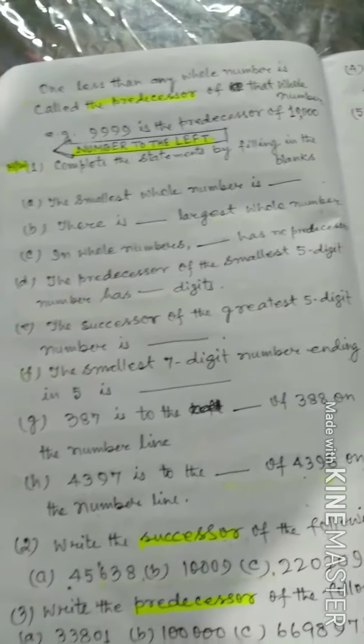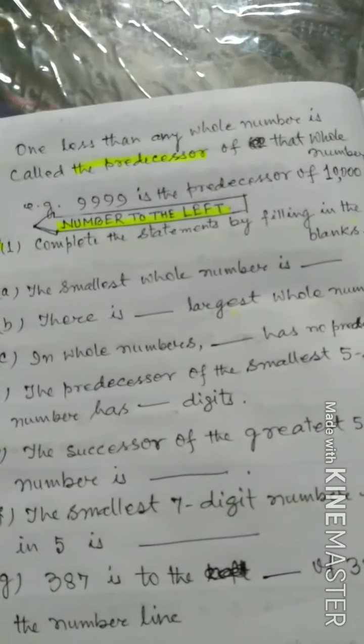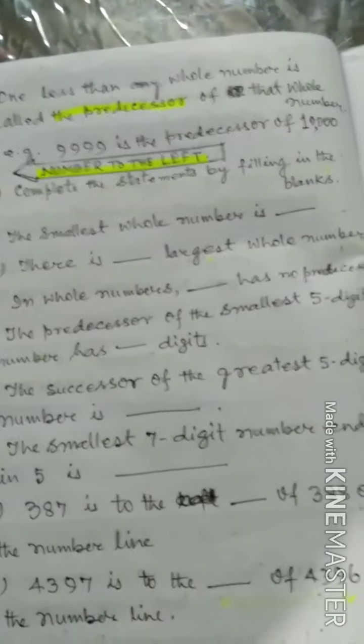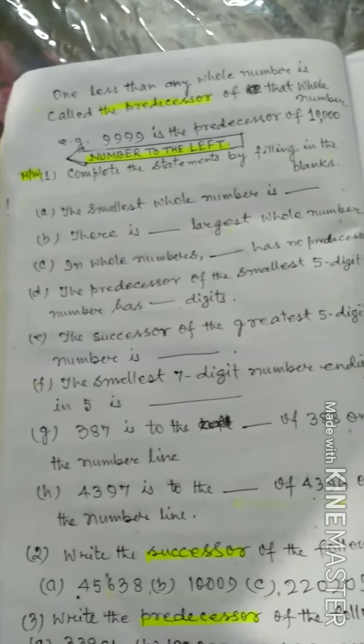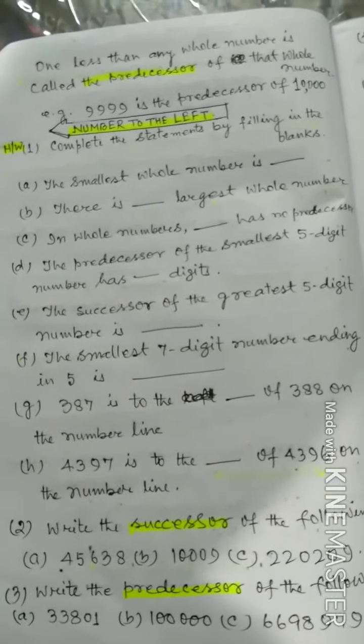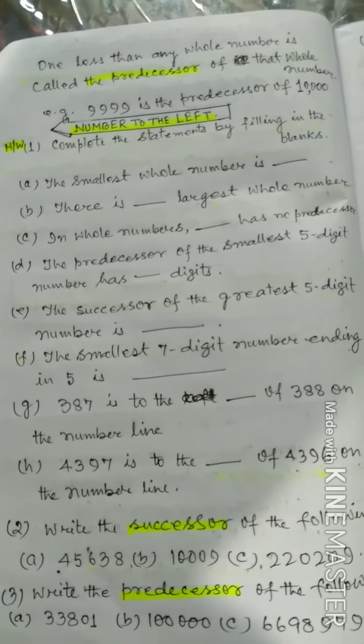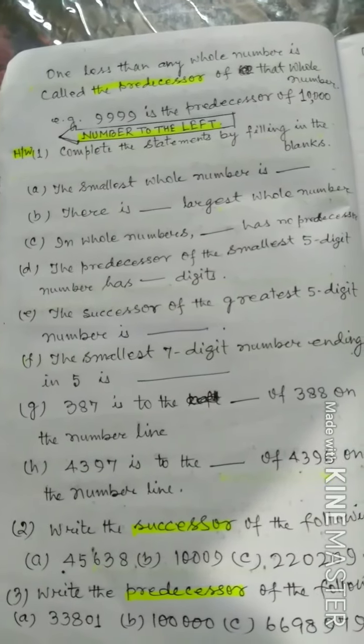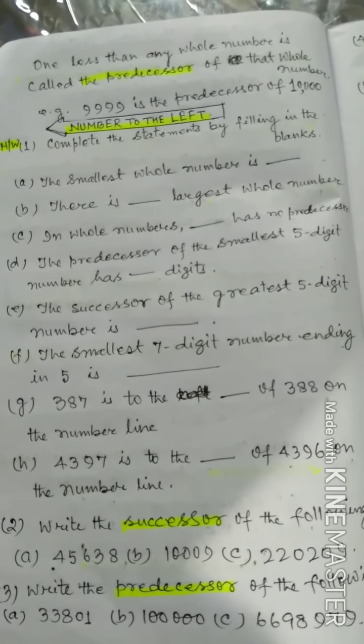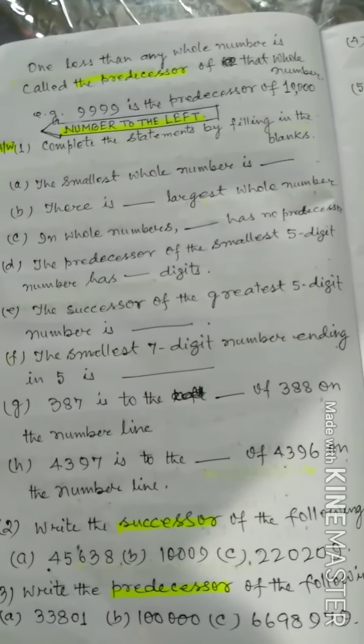One less than any whole number is called the predecessor of that whole number. For example, 9999 is the predecessor of 10,000. Here, on the number line, number to the left.